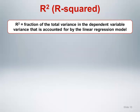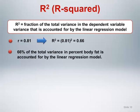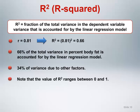Another value reported with the simple linear regression results is R-squared. The value derives its name from the fact that it is equal to the square of the Pearson linear correlation coefficient. The R-squared value represents the fraction of the total variance in the dependent variable that is accounted for by the linear regression model. For the body fat data, the Pearson correlation coefficient is 0.81 and the R-squared value is 0.66. This means that 66% of the total variance in percentage body fat is accounted for by the linear regression model with the abdomen circumference. The remaining 34% of variance is due to other factors. The higher the R-squared value, the better the linear regression model explains the variance in the dependent variable and the better X predicts Y. Note that since R ranges between negative 1 and 1, R-squared ranges between 0 and 1.